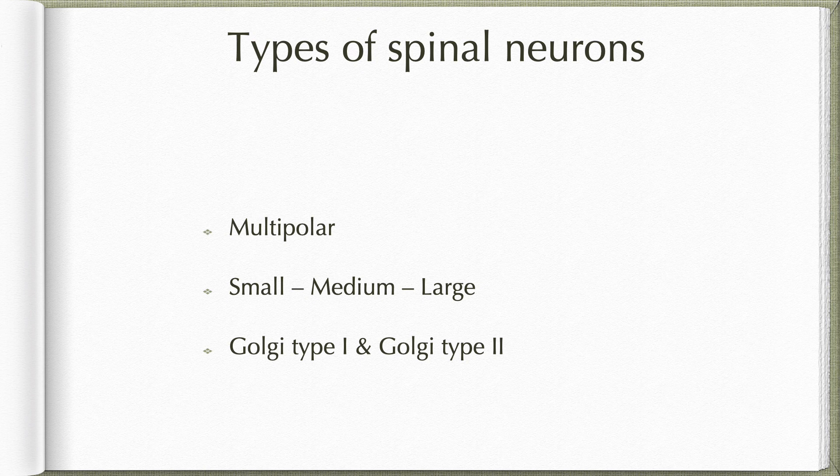Medium-sized neurons are found in most regions of the grey matter except for substantia gelatinosa. These cells receive the primary afferents coming from the dorsal root and they send the ascending fibers forming the ascending tract.